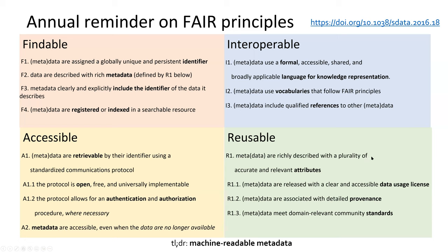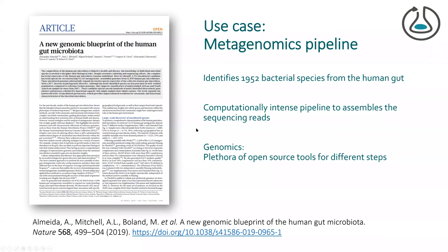That was a quick reminder about the FAIR principles — you'll see these popping up in what follows. Let's start with a use case from metagenomics, which is a very interesting field because you have not just normal genomics where you sample one individual, but here you have lots of them mixed together. In the human gut, for instance, one paper found almost 2,000 different bacterial species. How do you do this computationally?